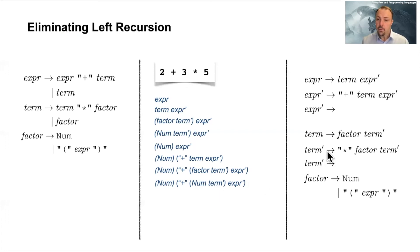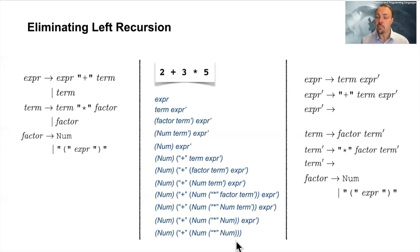So this num here corresponds to this num, and then we have term prime. What can we do with term prime? Well, we see here either it's a multiplication, which is really the case what we have here, or nothing. So we need to expand it to the multiplication with a factor. Then we have the factor again, and this factor is again expanded to a number. And this term prime here, well, we are finished, we don't have anything else, so we need to replace this term prime with nothing. And then since we have nothing more, this expression prime here is also replaced with nothing. So what we can see here is that we really managed to parse this using this rewritten grammar that has no left recursion. So we have num plus num multiplied by num.